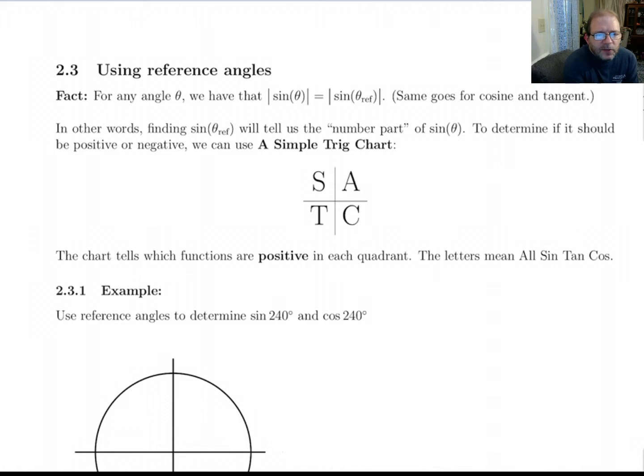Really, what this says is if you're trying to find sine of theta, well, if you find sine of the reference angle, that'll tell you the number part, but it won't tell you whether it should be positive or negative.